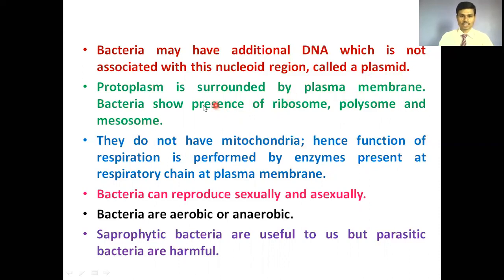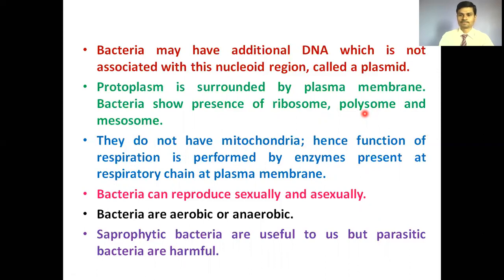Not all cell organelles are observed in bacterial cells, but two or three are still present. These are ribosomes — the 70S type of ribosome present in bacterial cells — and polysomes, which are three to four ribosomes bound onto mRNA; that structure is called a polysome. There are also mesosomes, which are present on the cell membrane.